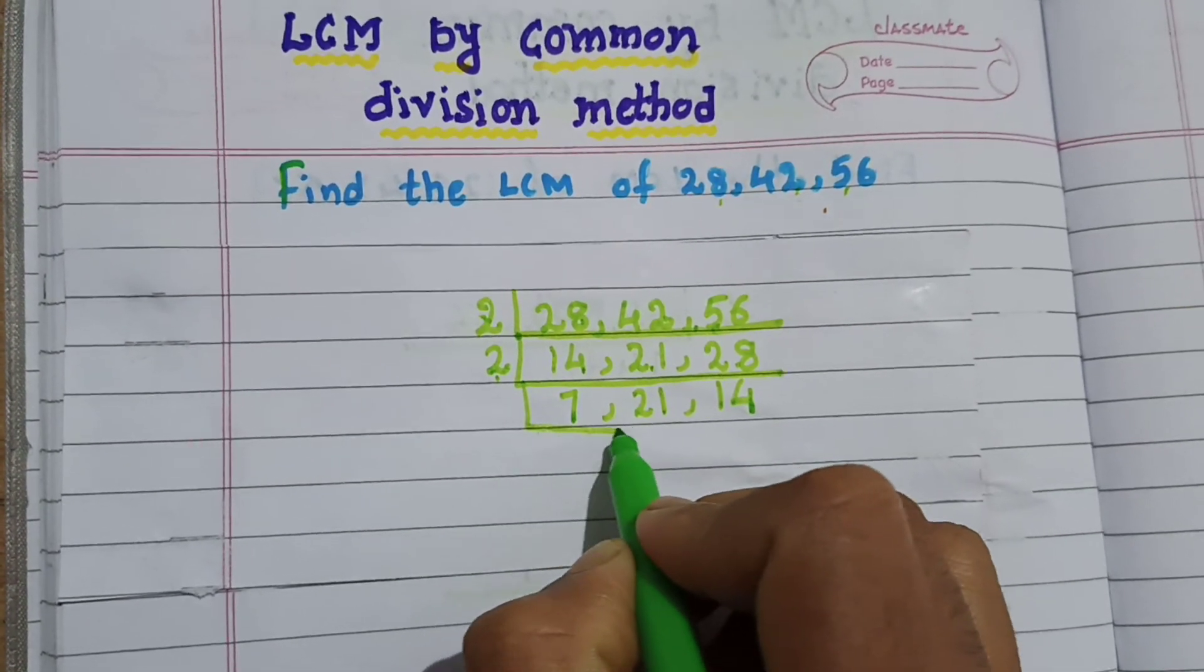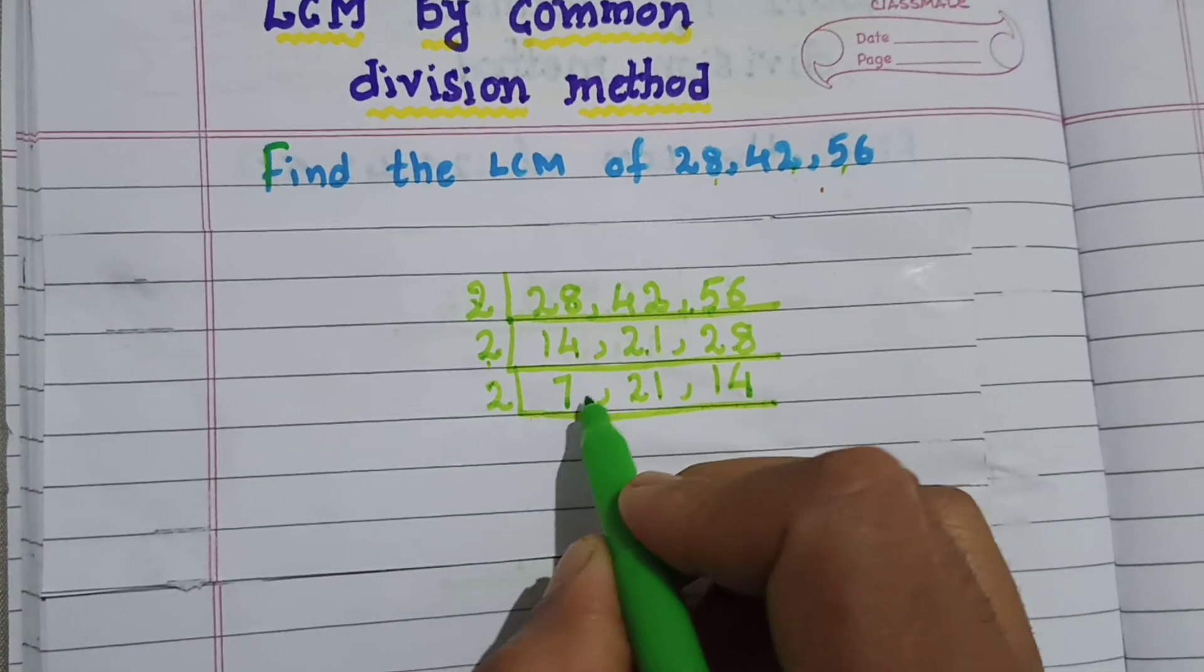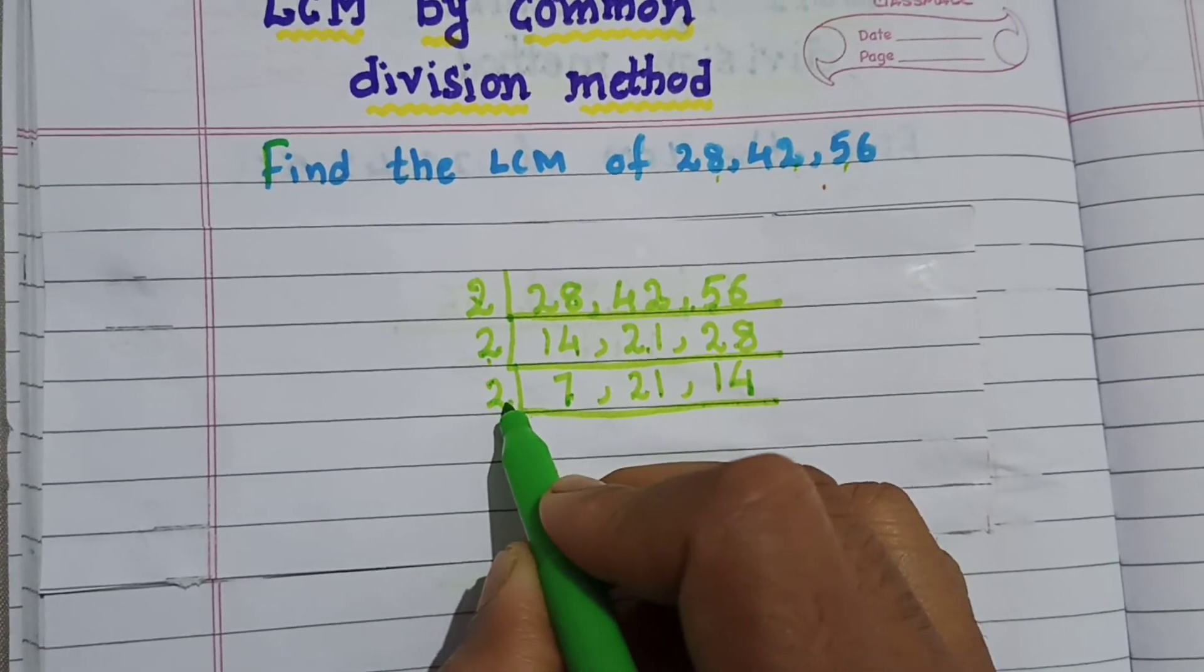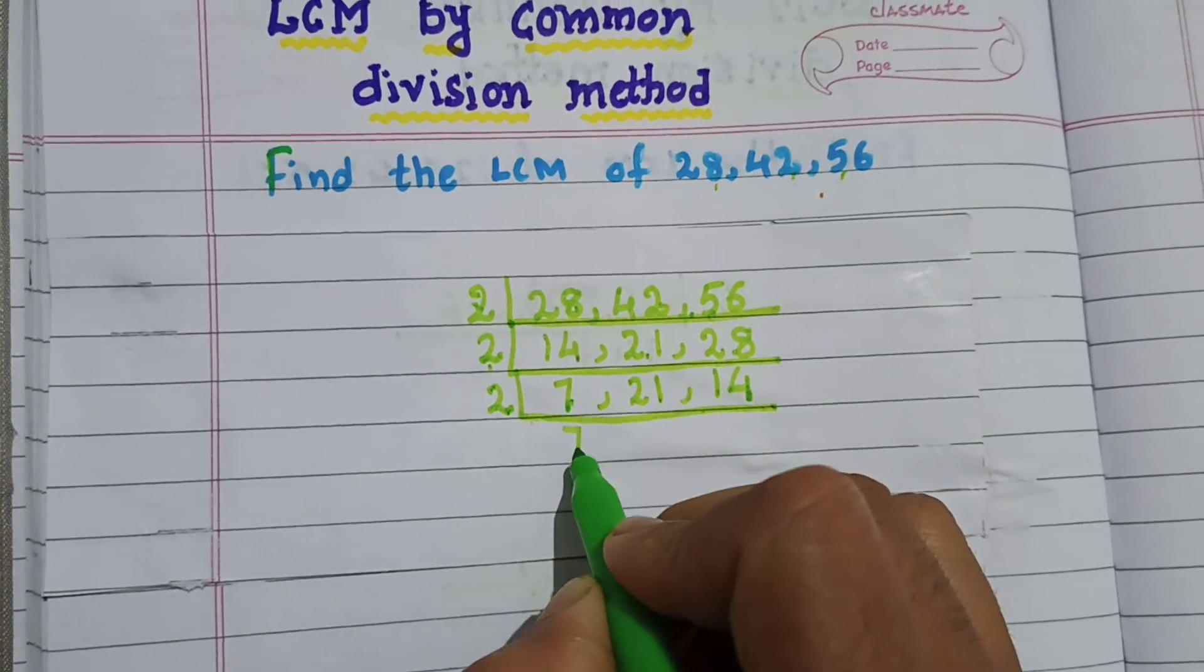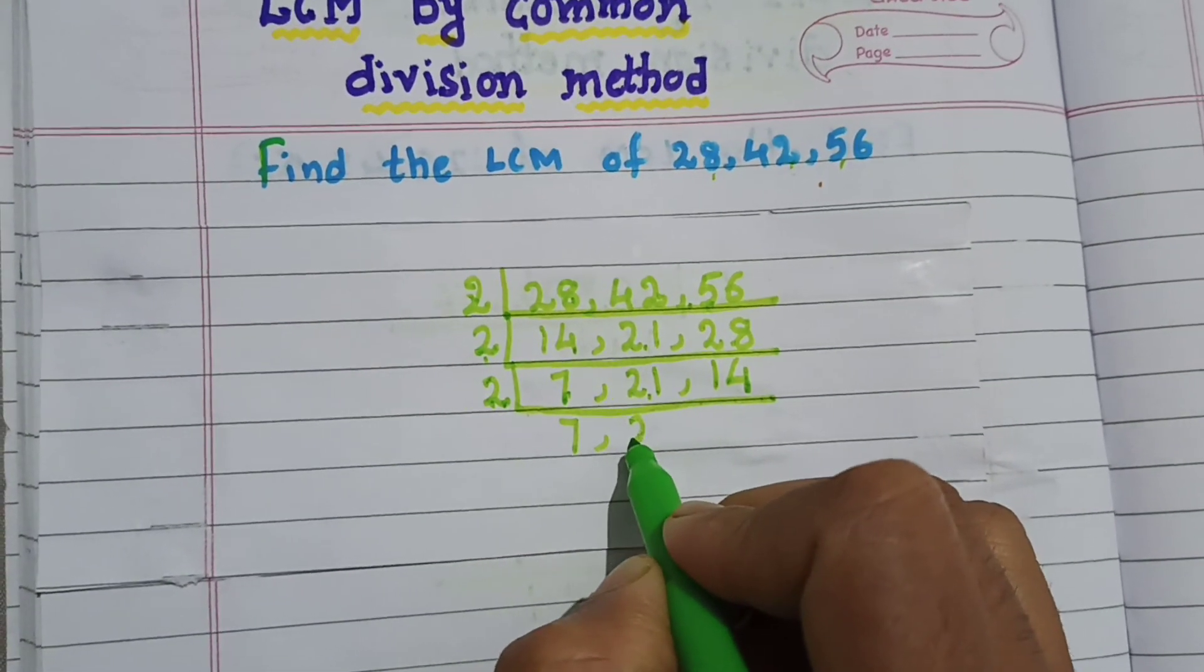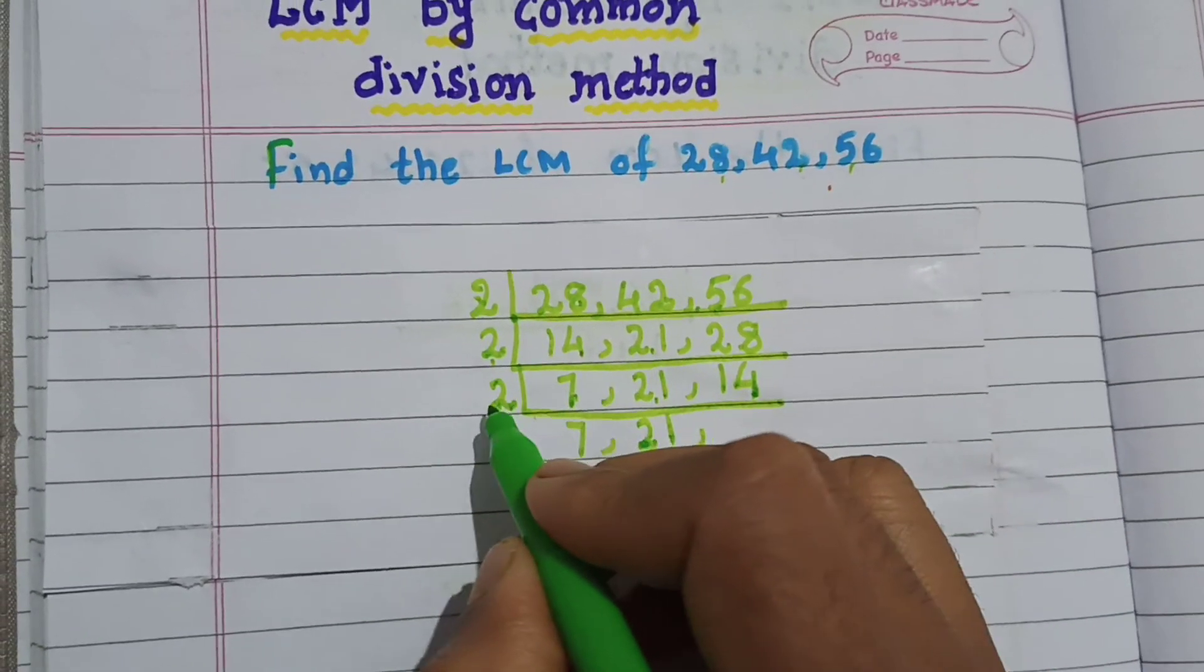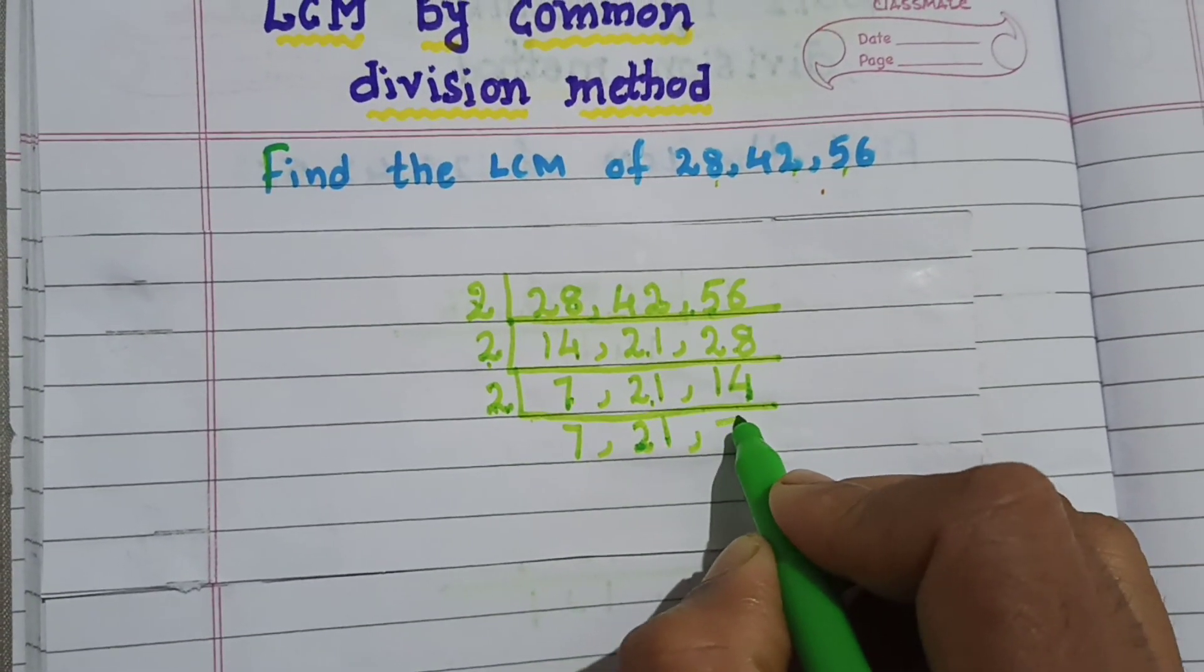Again, divide by the prime number 2. Now, 7 does not divide by 2, so write as it is. 21 does not divide by 2, write as it is. Now, 14 divided by 2 gives me 7.